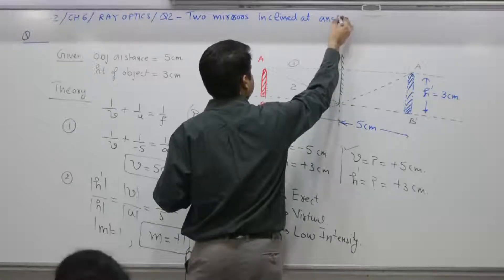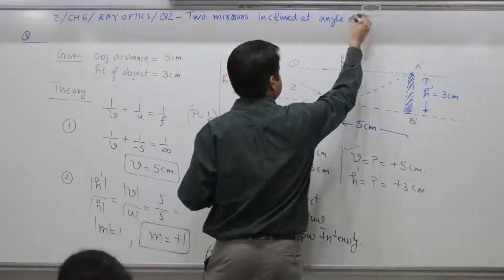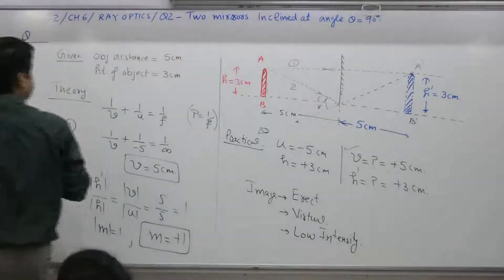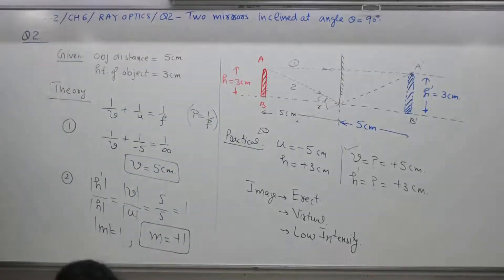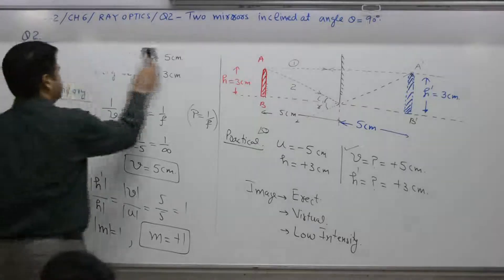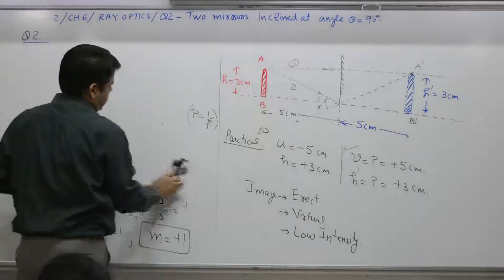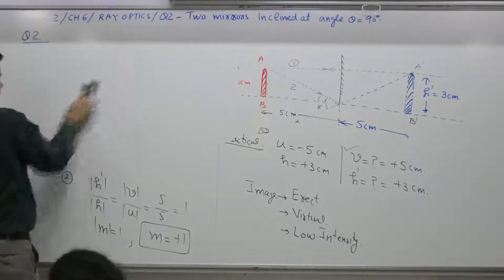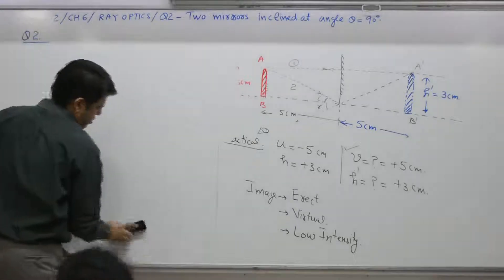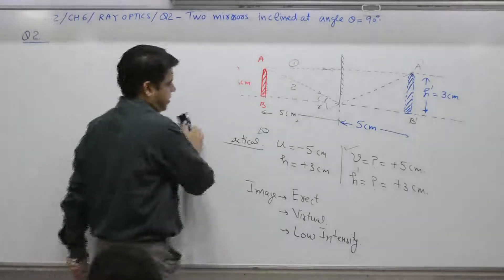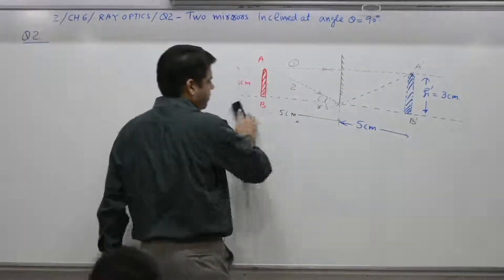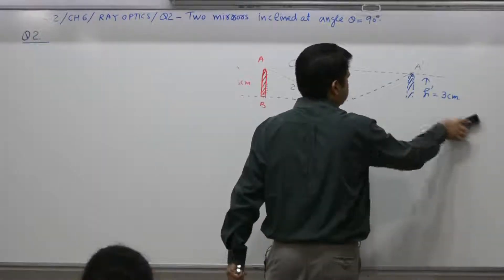The incline is at angle theta, in this case equal to 90 degrees. There are two mirrors and the angle between them is 90 degrees. You have to find out how many images are formed and how many of them suffer from the left-right problem.